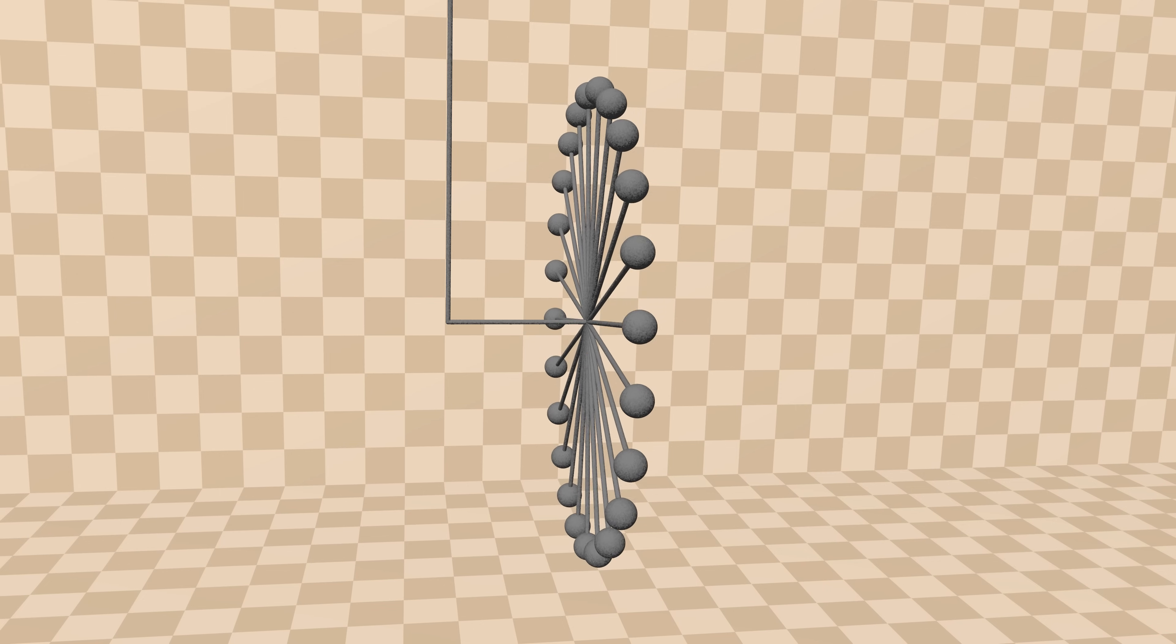Gravity is pulling down on the wheel here, and the rope is pulling up here. These forces combine to produce a twisting force, called a torque, trying to twist the wheel this way.